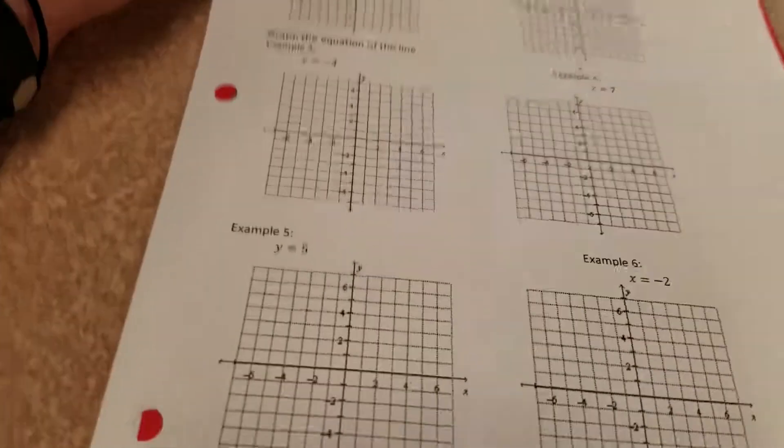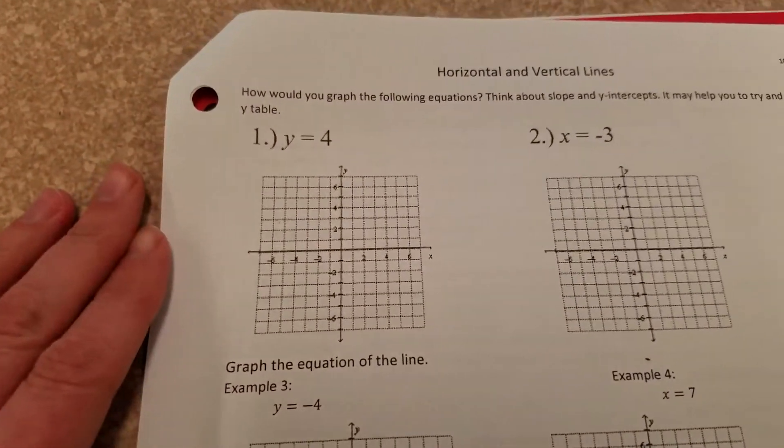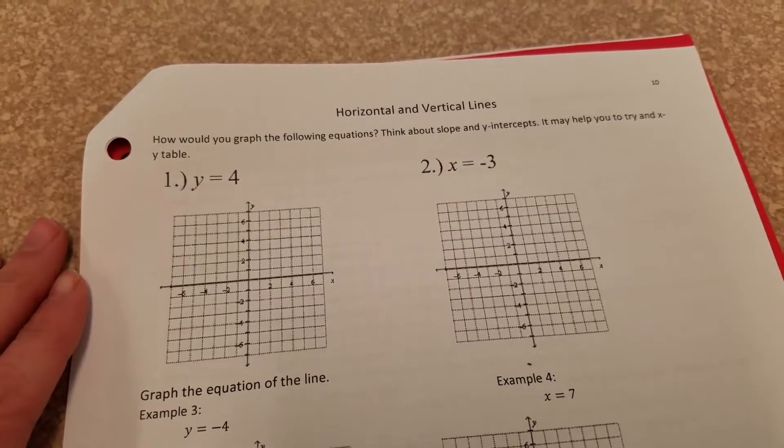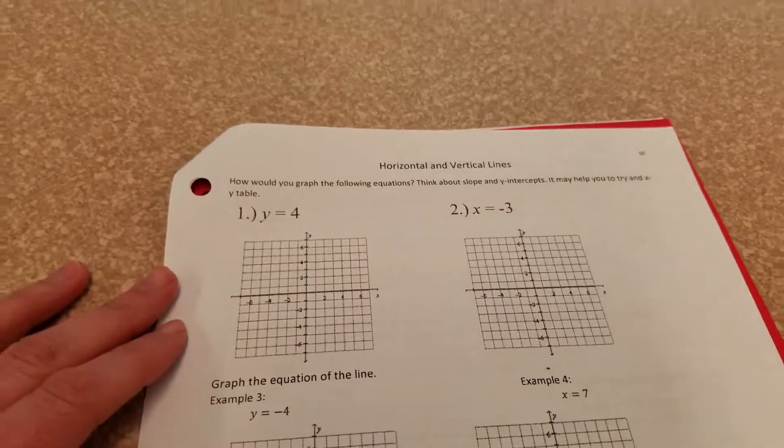Last lesson of the chapter, horizontal and vertical lines. Basically asking you to graph the following equations, thinking about slope and y-intercepts, try an x and y table.